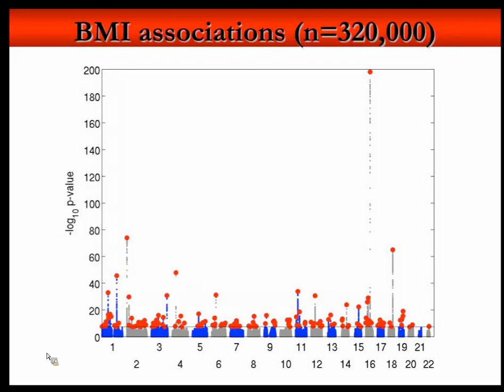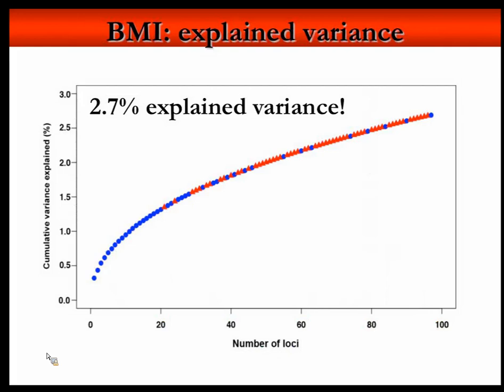For body mass index specifically, the latest study published two months ago found about 100 genome-wide significant loci — visible as red dots in the Manhattan plot. However, even cumulatively, these 100 loci explain not even 3% of the variability of BMI in the population. The top FTO variant explains only one third of a percent — roughly 0.34 BMI units. After around 50 loci the effects start to plateau, meaning each additional discovery explains very little additional variance.